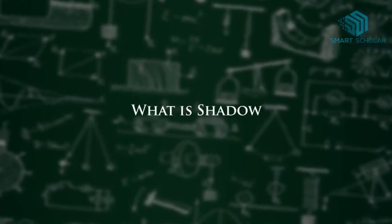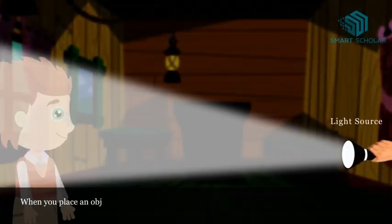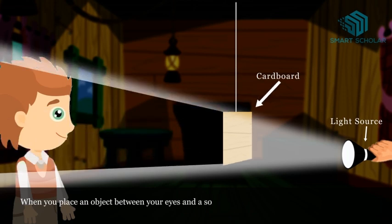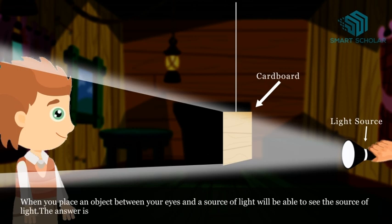What is shadow? When you place an object between your eyes and a source of light, will you be able to see the source of light? The answer is no.